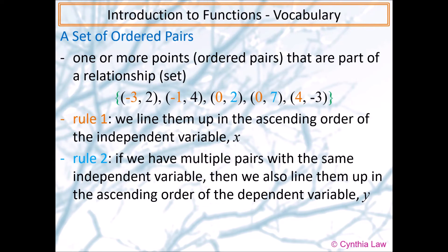So for the two points that have the same x value, zero comma two and zero comma seven, I lined up the two numbers that are in light blue. So two is before seven. So there's an order to where to put these points. We do not put them in there randomly. We put them in an order.